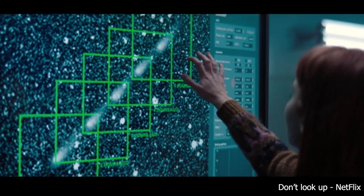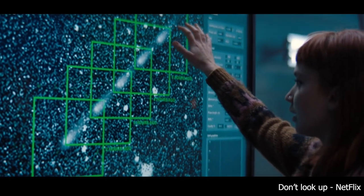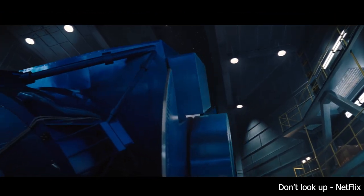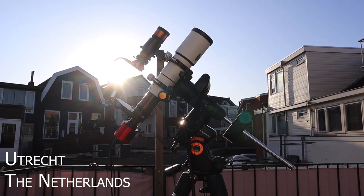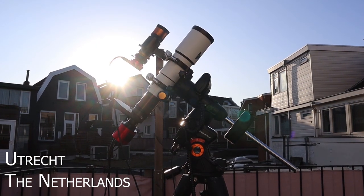In the Netflix movie Don't Look Up, two scientists discover a comet that is heading directly for Earth. In the movie, they use state-of-the-art equipment to track the comet. But what if I told you that you can watch and photograph comets from your own backyard? If you want to find out how, then stick around.